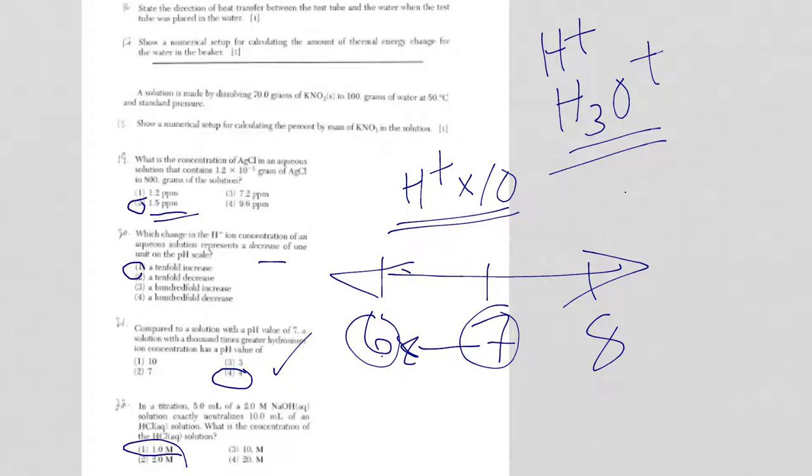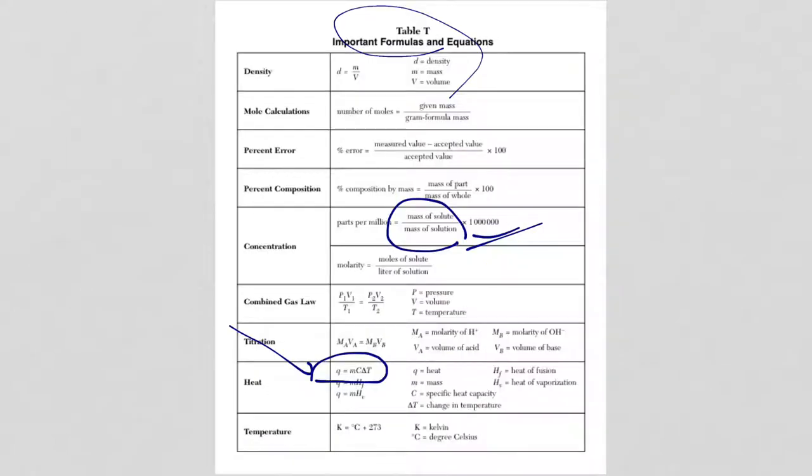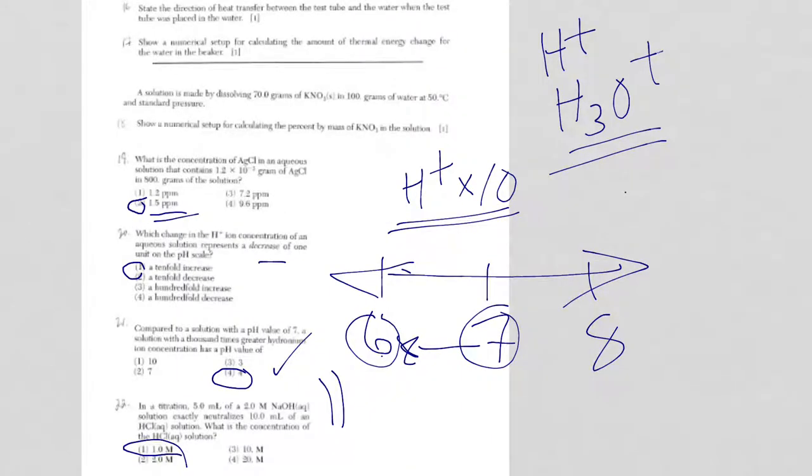Finally, for question 22, you have a neutralization reaction that is going on between an acid and a base. The process is called titration. The equation is on the reference table. The titration equation is right here. It's labeled as titration equation. The molarity of the acid times the volume of the acid is equal to the molarity of the base times the volume of the base.